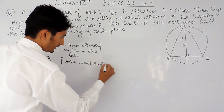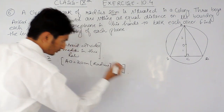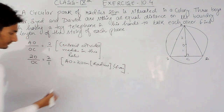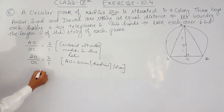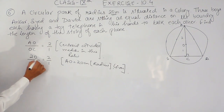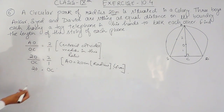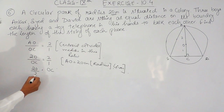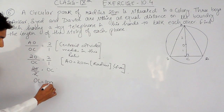This radius is given to us. Now if I cross multiply — multiplying 20 by 1 gives 20, and OC multiplied by 2 gives 2·OC. Shifting terms, and cancelling, the value of OC will be equal to 10 centimeters.